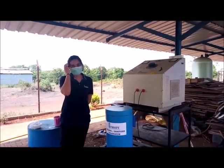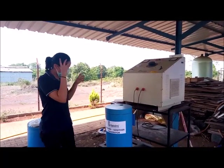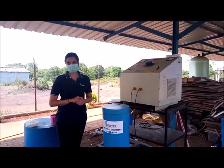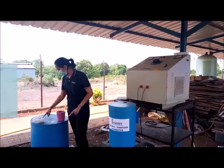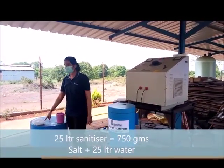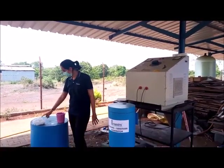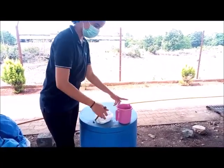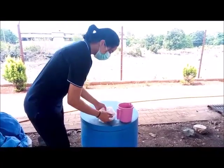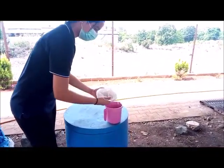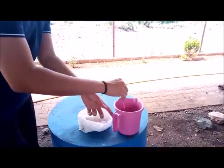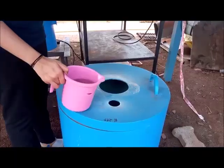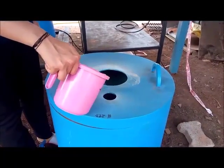Now we'll see how to produce sodium hypochlorite solution using the chloro sanitizer unit. Mainly there are three components: non-iodized salt, tap water, and electricity. Take 1 to 2 liters of water and add 750 grams of salt. Stir it until the salt dissolves completely.